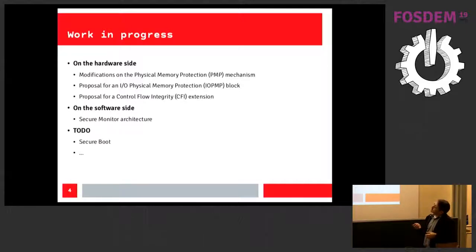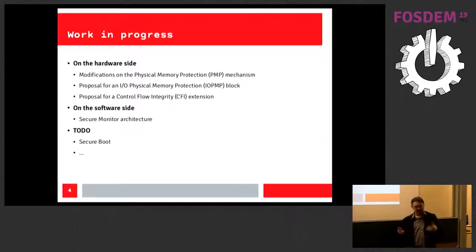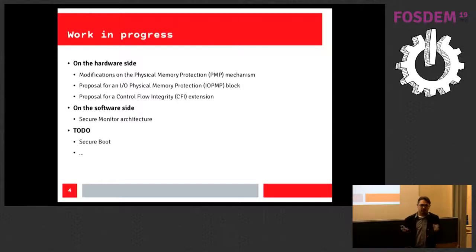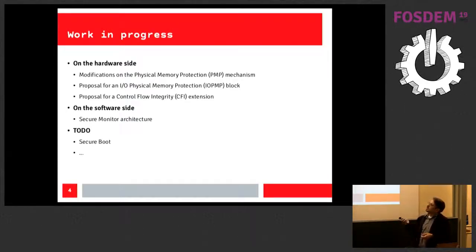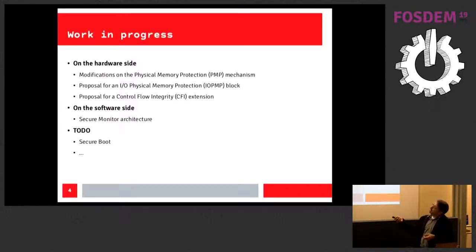We also want to protect the control flow of an application. If there's a bug in your code and someone can do a buffer overflow and override your return address — a common exploit development scenario — this messes up your control flow. We want to discuss a control flow integrity extension so that if someone tries to override your return address, they won't be able to succeed. ARM and Intel have implemented something similar. This is on the hardware side.